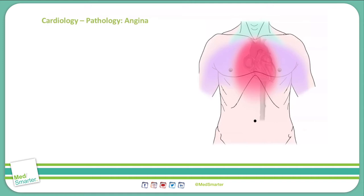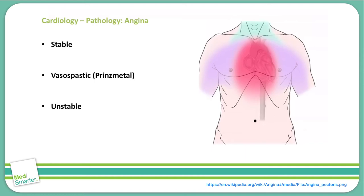Angina can be broken down into three different categories: stable, vasospastic — also known as Prinzmetal's angina — and unstable angina. It is important to be able to distinguish between these three types because they are treated differently.